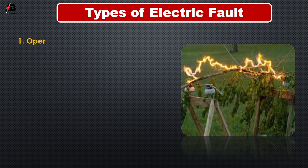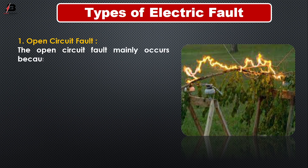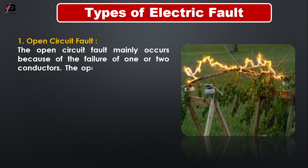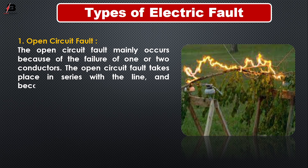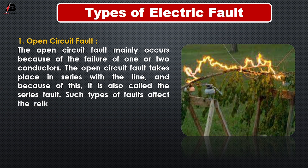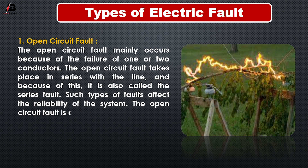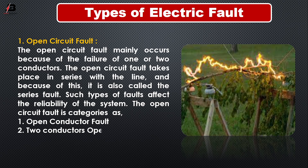Number one: open circuit fault. The open circuit fault mainly occurs because of the failure of one or two conductors. The open circuit fault takes place in series with the line, and because of this it is also called the series fault. Such types of fault affect the reliability of the system. The open circuit fault is categorized as: number one, open conductor fault; number two, two conductor open fault; number three, three conductor open fault.